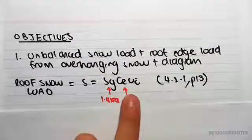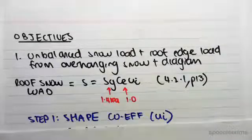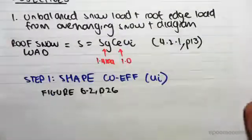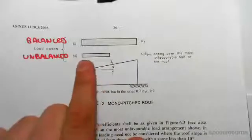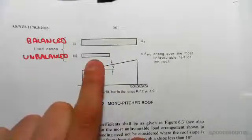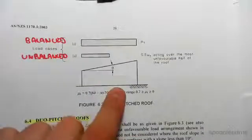So all I need to find is mu i. Step one: the shape coefficient mu i. We go to figure 6.2, page 26. So back to this figure, here is the unbalanced case.